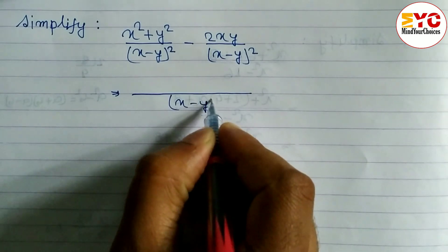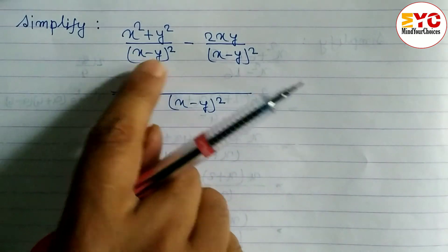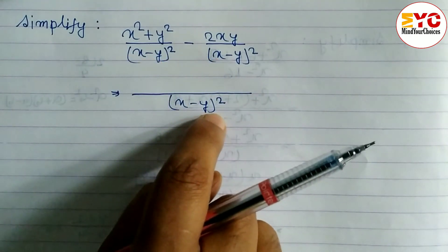So what we can take here? LCM is x minus y whole squared. LCM means we have to take common and remaining, but here nothing remaining. Just a common is x minus y whole squared.